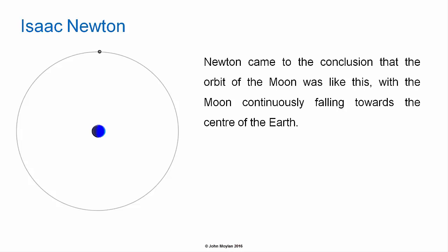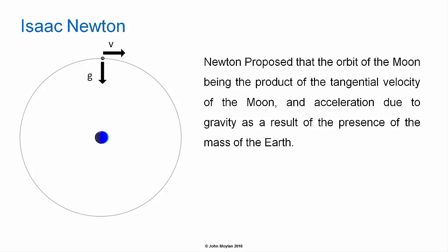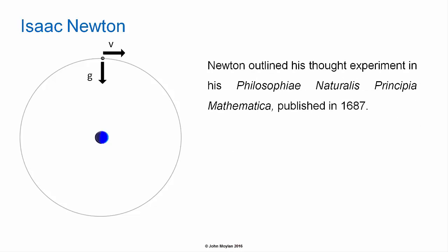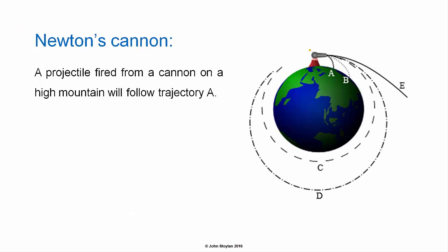Newton realized that the moon was continuously falling towards the earth, but that it had sufficient tangential velocity that its rate of fall was matched by the curvature of its orbit. Newton proposed that the orbit of the moon was the product of the tangential velocity of the moon and acceleration due to gravity as a result of the presence of the mass of the earth. Newton outlined this thought experiment in his Philosophiae Naturalis Principia Mathematica, published in the year 1687. This thought experiment is usually referred to as Newton's cannon.